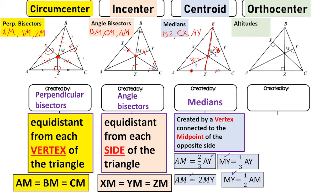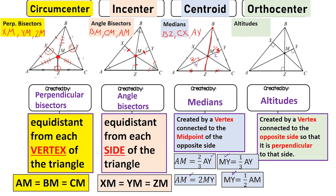Last, we have the orthocenter, created by altitudes. Altitudes are created by connecting a vertex to the opposite side so that it is perpendicular to that side. My altitudes here are BZ — starting at B with a right angle — AY, going from vertex A perpendicular to the opposite side, and CX. Those are my altitudes, and those are the four points of concurrency.